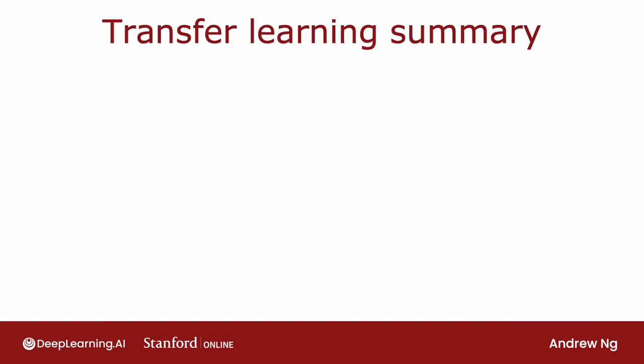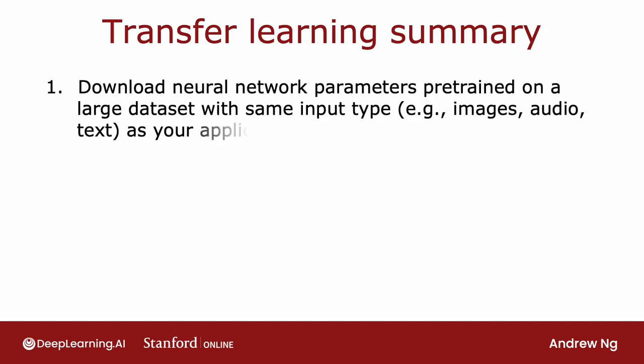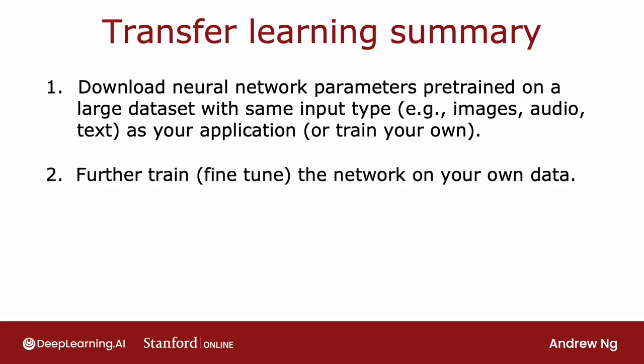To summarize, these are the two steps for transfer learning. Step one is download a neural network with parameters that have been pre-trained on a large dataset with the same input type as your application. And that input type could be images, audio, text or something else. Or if you don't want to download a neural network, maybe you can train your own. But in practice, if you're using images, it's much more common to download someone else's pre-trained neural network, then further train or fine-tune the network on your own data.